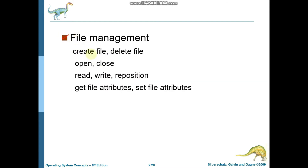Next is file management. The activities performed by the file management system call are: file create, file delete, file open or close, and file data operations including read, write, and reposition. You can also get and set file attributes. These are all the activities made by the file management system call.